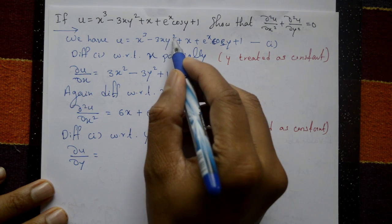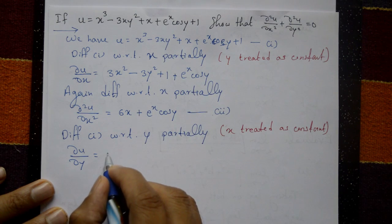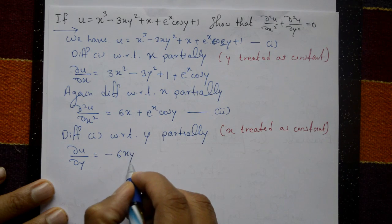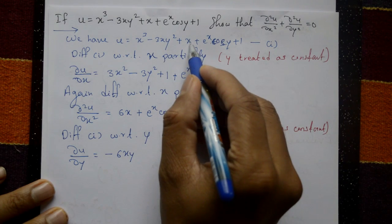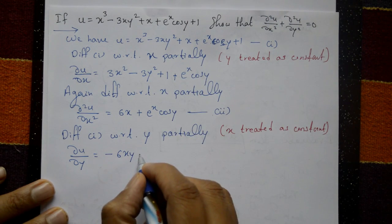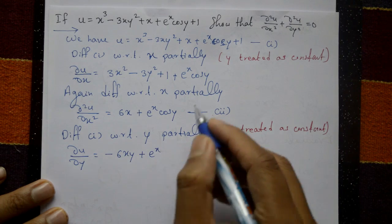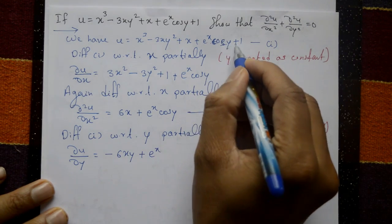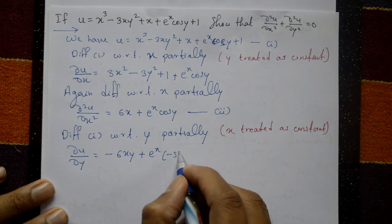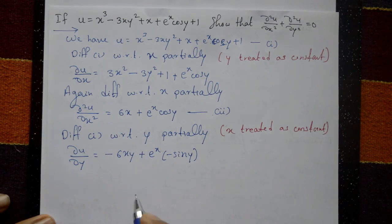∂u/∂y = minus 6xy. The term x is a constant, eˣ is a constant as it is, differentiating cos y gives minus sin y, and the constant term 1 gives 0.